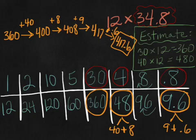Now, let's take a look at our estimate here. Our estimate said it's going to be between 360 and 480, because we had an underestimate and an overestimate. So, let's ask ourselves, does this make sense? Yes! And we're all very happy.